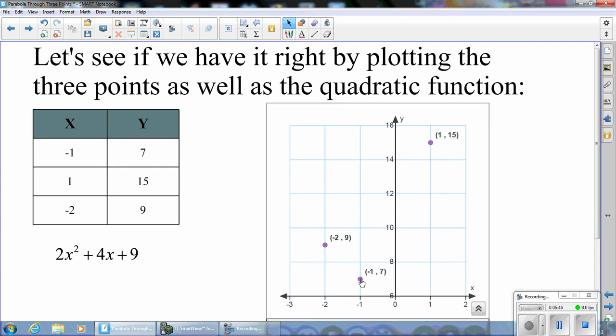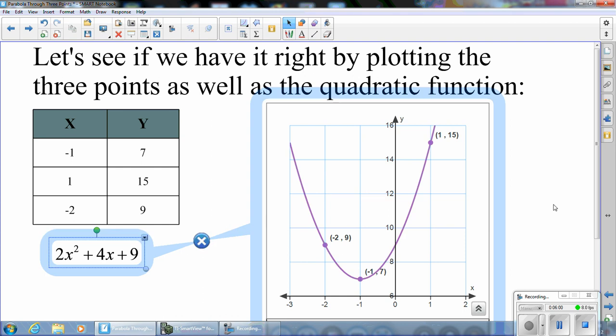And let's look at that. And we can see those are the three points: negative 1, 7; 1, 15; and negative 2, 9. And it appears that a parabola could go through them. Here is 2X squared plus 4X plus 9. And I'm just going to grab this handle and bring it into the graph. And we can see that, in fact, that is the parabola that goes through those three points.